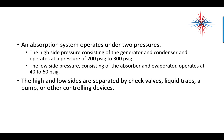An absorption system operates under two pressures. The high-side pressure, consisting of the generator and condenser, operates at 200 to 300 PSIG. The low-side pressure consists of the absorber and evaporator and operates between 40 and 60 PSIG. The high and low sides are separated by check valves, liquid traps, a pump, and other controlling devices.